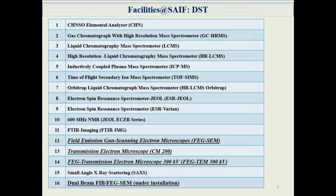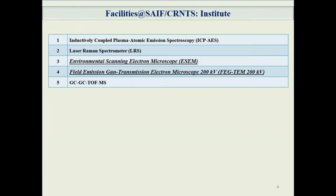The current slide shows the list of instruments funded by DST, in which three of the electron microscopes have been highlighted. The one at the bottom is an upcoming facility, a dual beam focused electron and ion beam, which will be installed soon. This slide also shows the list of instruments under the central facility funded by IIT Bombay, with two of the electron microscopes highlighted.